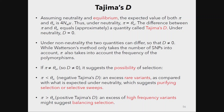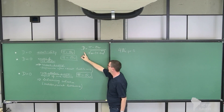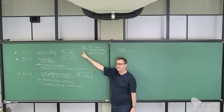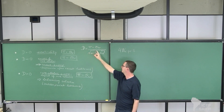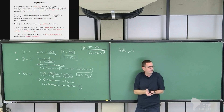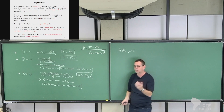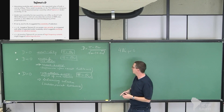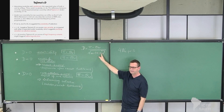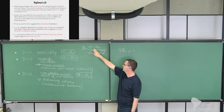Tajima's D is approximately the difference pi minus Watterson's theta, divided by the variance of that difference. Under standard neutrality, pi equals Watterson's theta, so D equals zero. D is positive when pi is larger than Watterson's theta, and negative when Watterson's theta is larger than pi. You can think of D roughly as the difference between these two measures — the key point is that pi takes variant frequencies into account while Watterson's method only counts segregating sites.